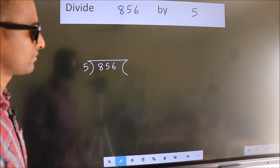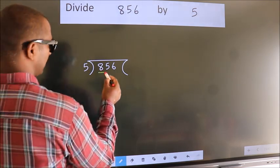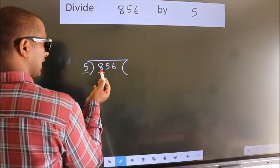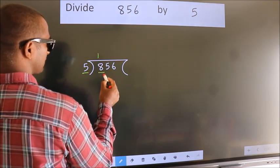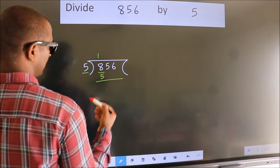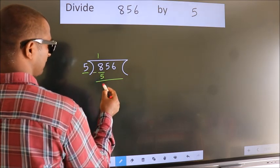Next. Here we have 8, here 5. A number close to 8 in 5 table is 5 once 5. Now we should subtract. We get 3.